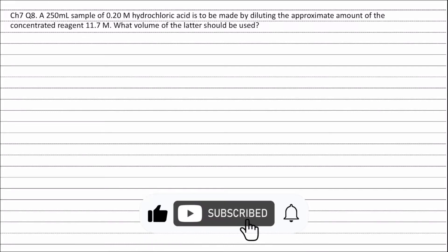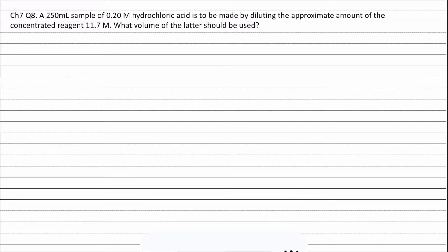Question 8. A 250 ml sample of 0.20 M hydrochloric acid is to be made by diluting the approximate amount of the concentrated reagent 11.7 M. What volume of the latter should be used?